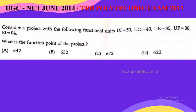Now let's solve a problem. This is a problem from the UGC NET exam and various competitive examinations. Consider a project with: user inputs = 50, user outputs = 40, user enquiries = 35, user files (UF) = 6, and external interfaces (EA) = 4. We need to calculate the function points. Note that no weighting parameter is given, so we assume average. In some problems it may be given; if not, assume average.